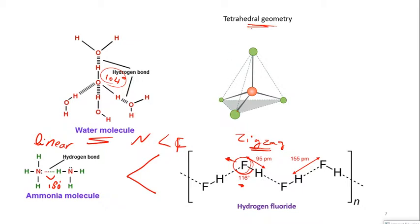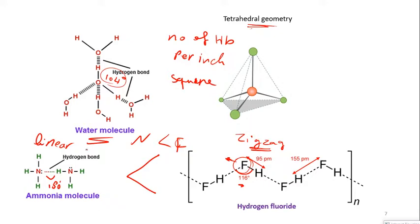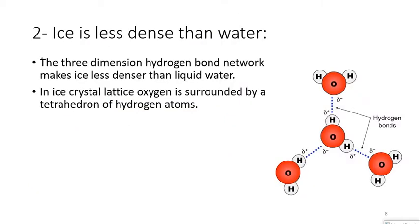In water, the tetrahedral crystal geometry with a 104° angle forms the most stable crystal lattice. This tetrahedral geometry results in a greater number of hydrogen bonds per unit area compared to the linear or zigzag shapes of ammonia and hydrogen fluoride. This is what makes hydrogen bonding in water much stronger than both hydrogen fluoride and ammonia.